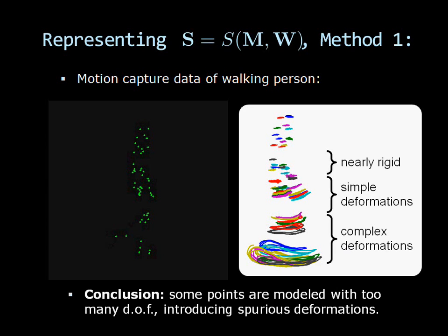The conclusion is that with this representation of S, some points are modeled with too many degrees of freedom. They can introduce spurious deformations in the recovered shapes, for instance, when the extra degrees of freedom fit noise in W.